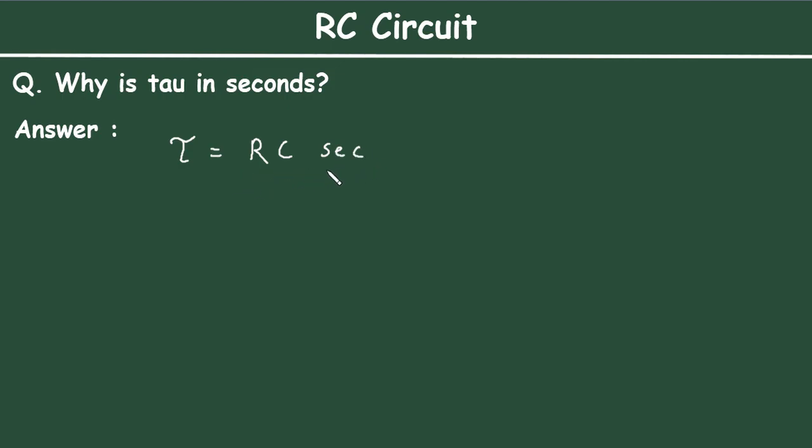So why is it in seconds? As we know from Ohm's law, resistance equals voltage divided by current. The unit of voltage is volt [V], and the unit of current is ampere [A].